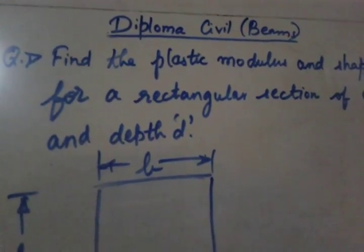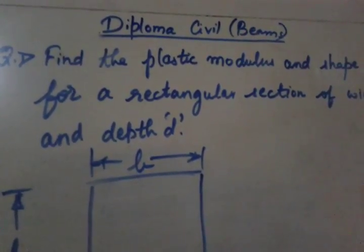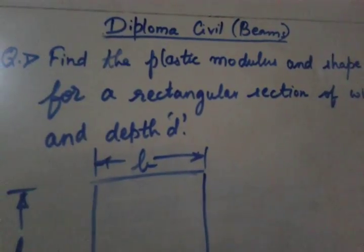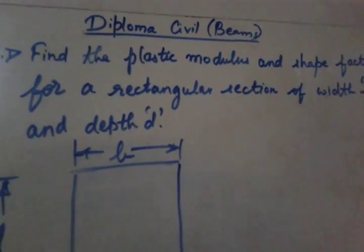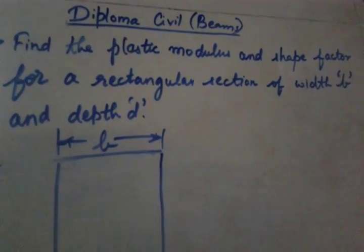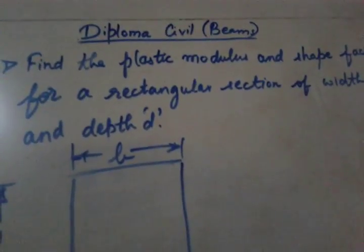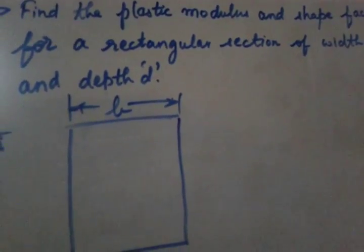Friends, today's topic of discussion is a problem for Diploma Civil from the chapter Beams. The question is find the plastic modulus and shape factor for a rectangular section of width B and depth D.